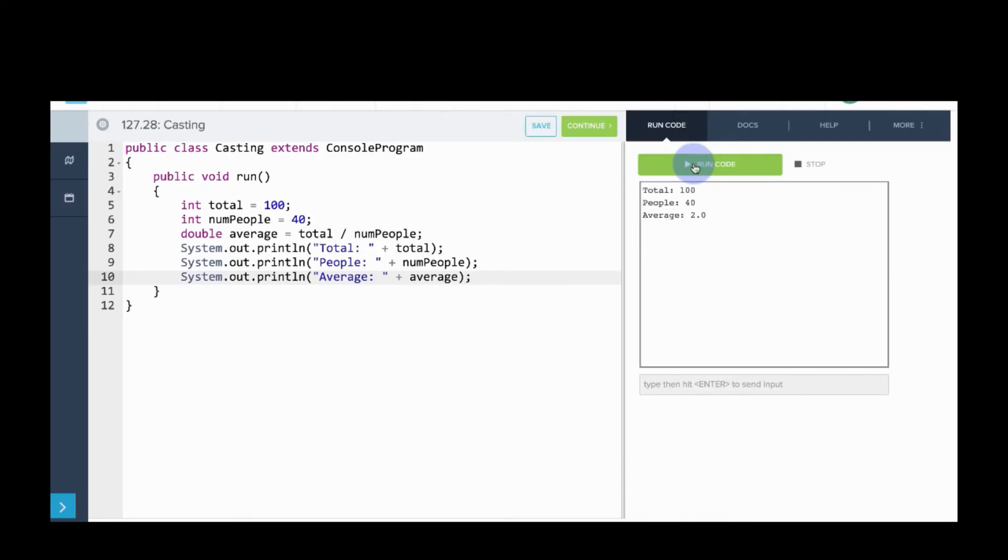Okay, so we can see the average is 2.0, which isn't right, but we're getting that answer because of integer division. What we want to do is cast total as a double, and if total is treated as a double, we should get the correct result.